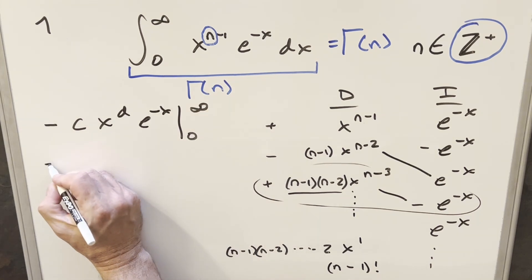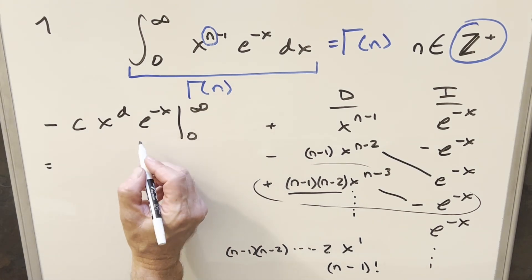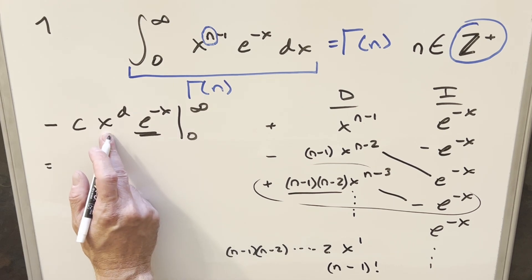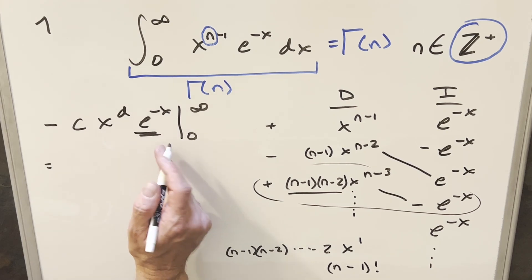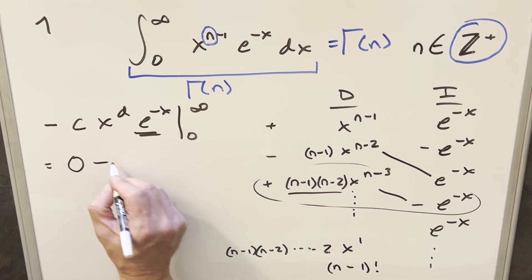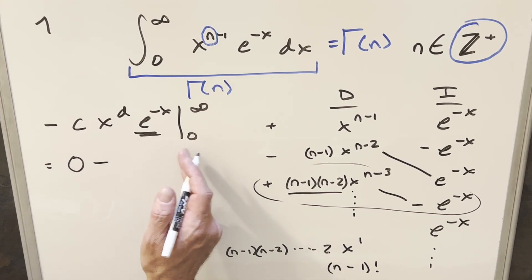Well, when you go ahead and evaluate this, first at infinity, this piece is going to 0 because we've got the negative exponent. Now of course, x to the d, this is going to infinity, but the exponential is much more powerful. So what's going to happen when this is going to infinity, this is going to 0. And then when you plug in and evaluate at 0,